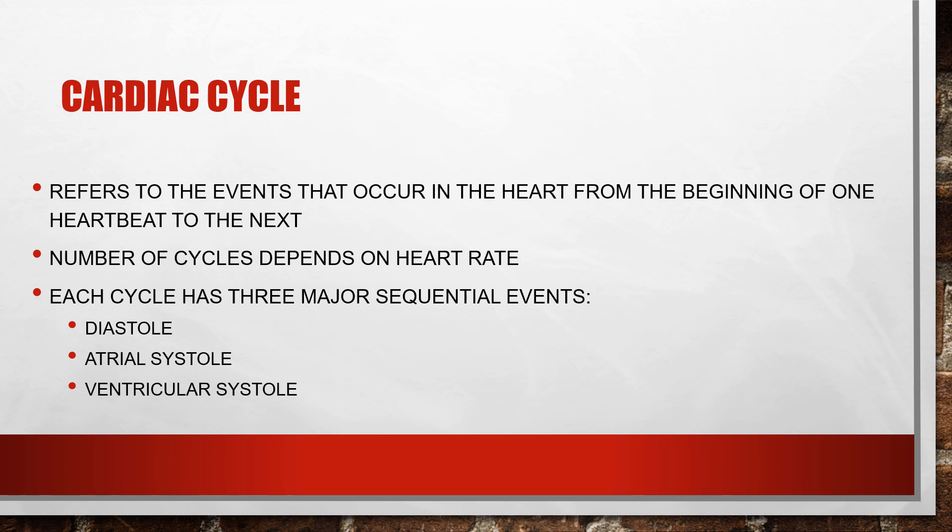The cardiac cycle is everything that occurs from the beginning of one heartbeat to the beginning of the next. Each cardiac cycle has three phases: diastole, atrial systole, and ventricular systole. Diastole is when the heart is at rest — all four chambers are relaxed, the AV valves are open, and the semilunar valves are closed. This is when ventricular filling occurs.